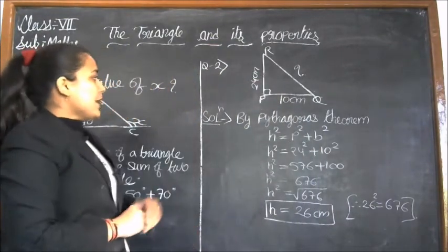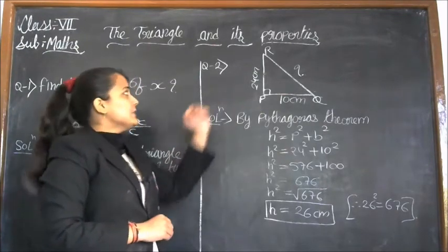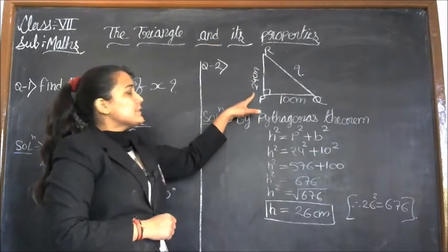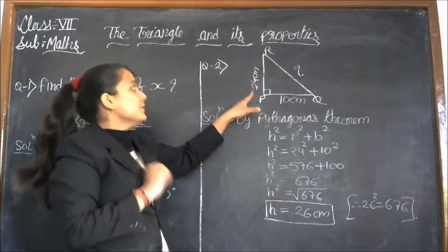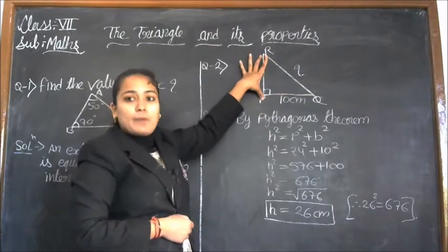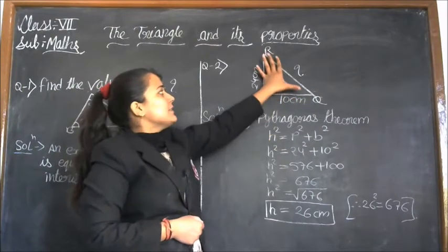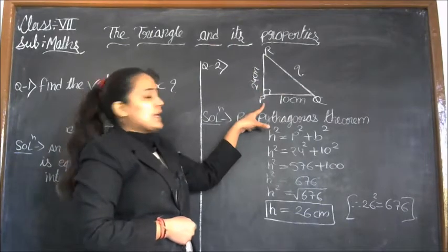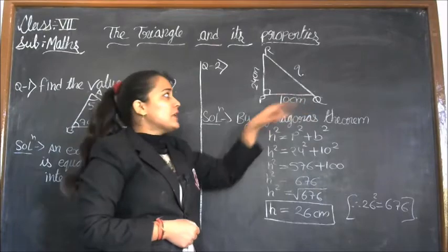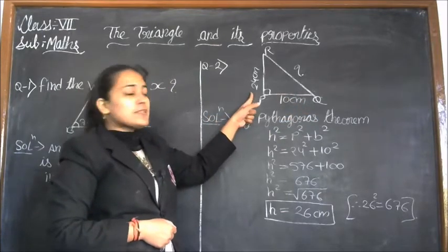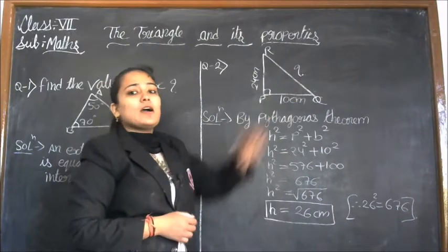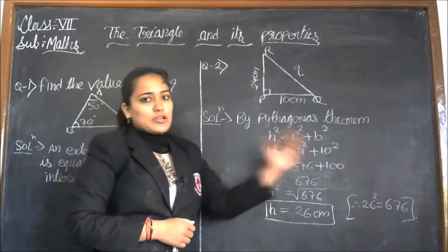Now in the next question we have to find the hypotenuse. A diagram is given showing a right triangle with a perpendicular, a base, and a hypotenuse. RP is the perpendicular, PQ is the base, and QR is the hypotenuse. Perpendicular is 24 centimeters, base is 10 centimeters, and we have to find the hypotenuse using the Pythagorean theorem.